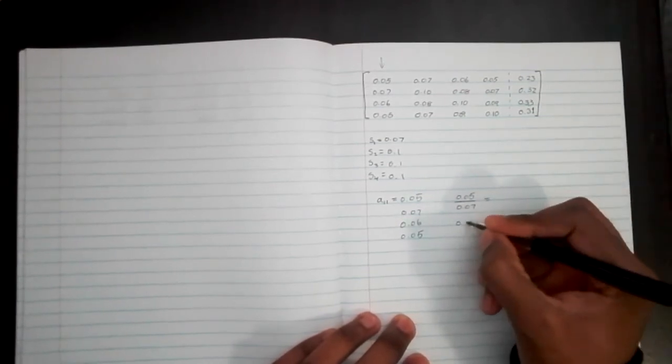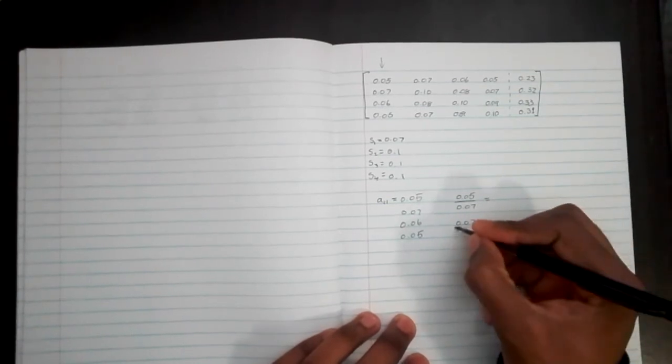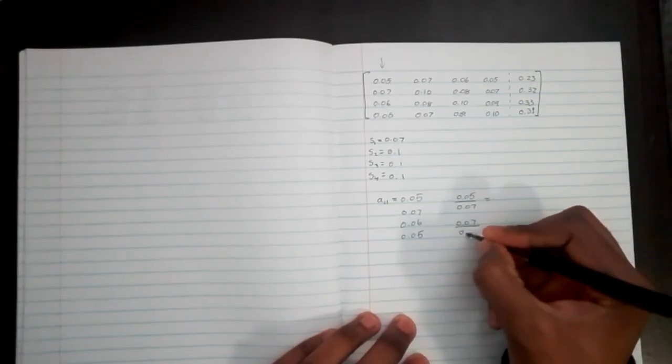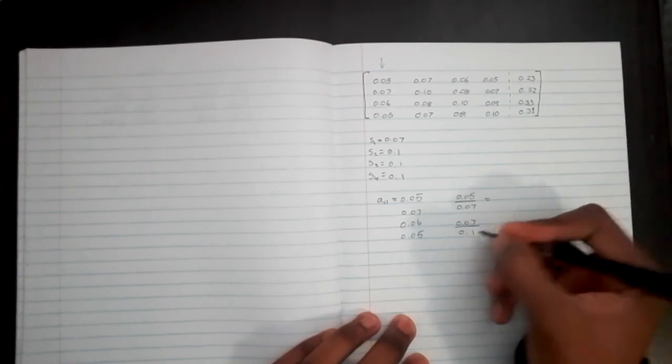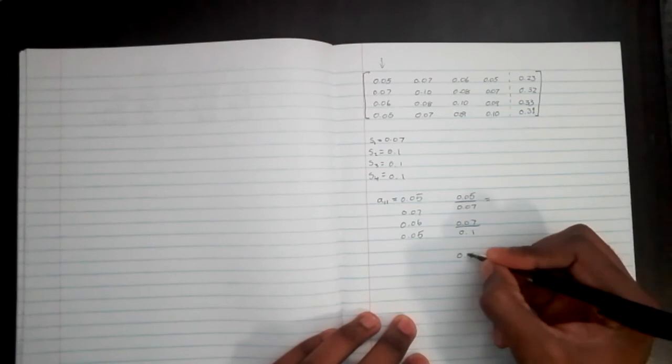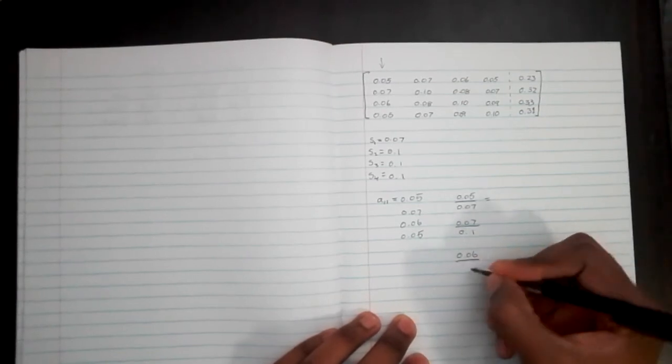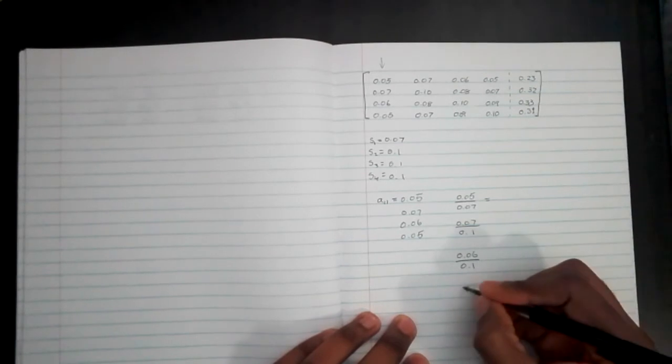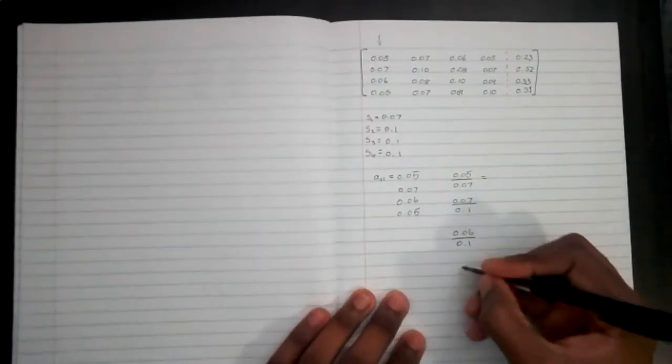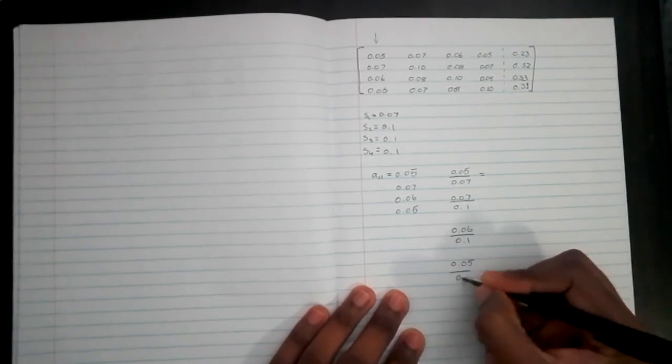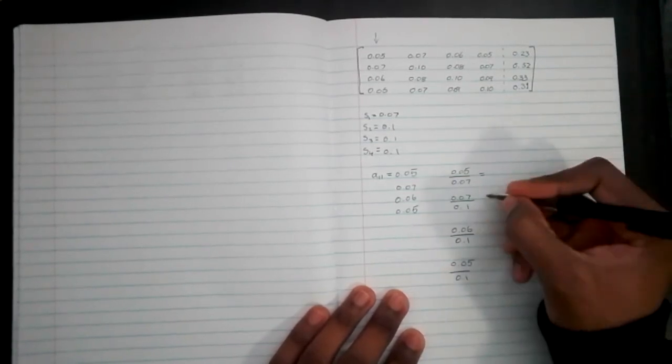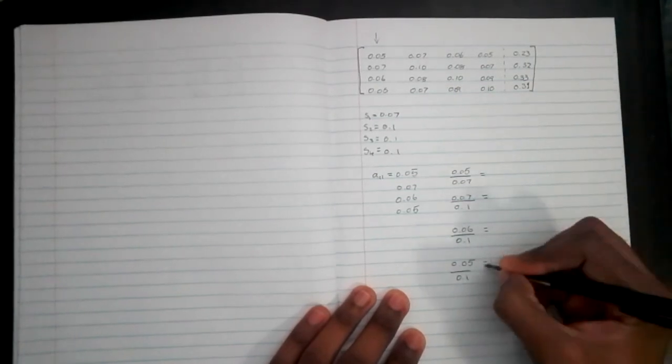The next one, 0.07, we'll need to divide that by its highest, which is 0.1. Next one, 0.06 divided by 0.1. And I hope you're getting the pattern. 0.05 divided by 0.1. We'll grab the calculator.